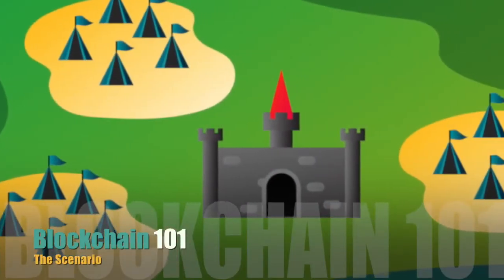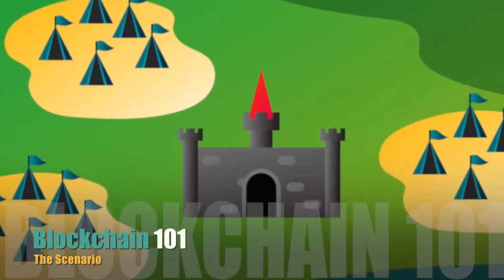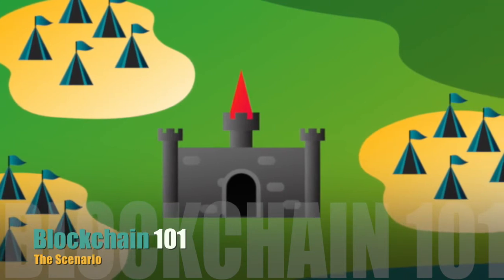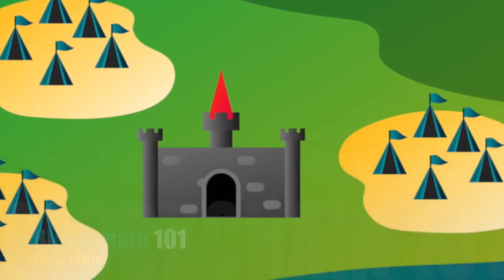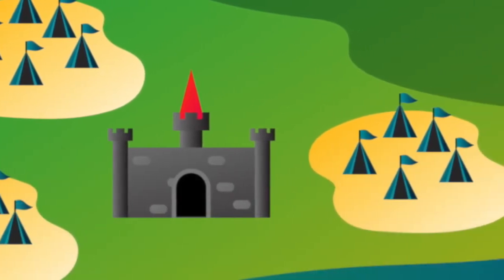Here's the scenario. Imagine that the powerful Byzantine Empire has decided to capture a city. They're going to face fierce resistance. The Byzantine army has completely encircled the city. However, this has separated the Byzantine army into two separate encampments.